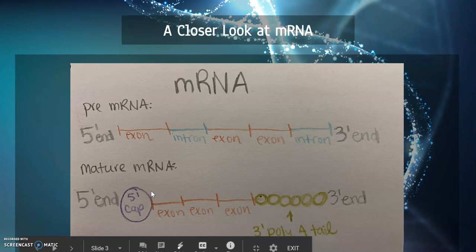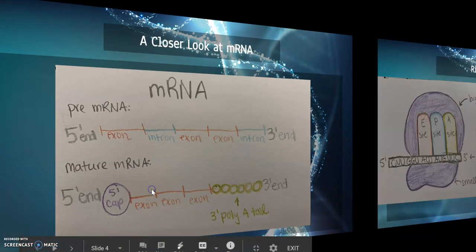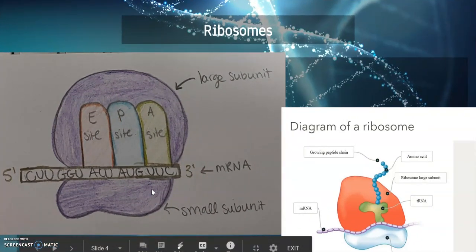mRNA, or messenger RNA, begins as pre-mRNA and is edited to become mature mRNA. The most critical steps of editing include the removal of introns, the addition of a 5' cap — which serves as a bonding site for the ribosome — and the addition of a 3' poly-A tail, which helps with attachment to the ribosome. Ribosomes are critically important as they are the location of translation.